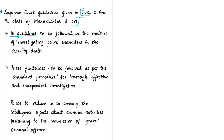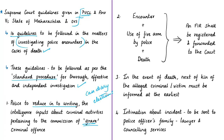The first requirement is that when police receive intelligence about criminal activities pertaining to a grave criminal offense, such information shall be recorded in writing — preferably in the case diary used by the police station or in electronic form. The second guideline is that if an encounter involves use of firearms and death results, a First Information Report (FIR) shall be registered and forwarded to the court of law.